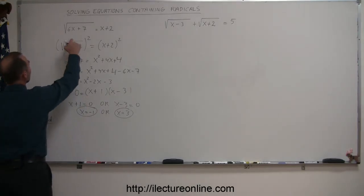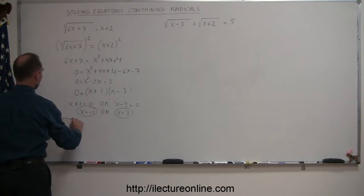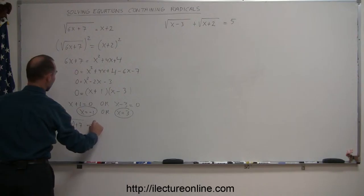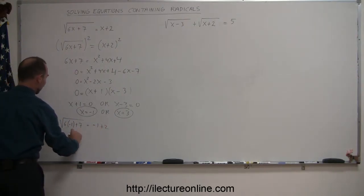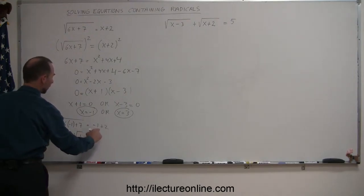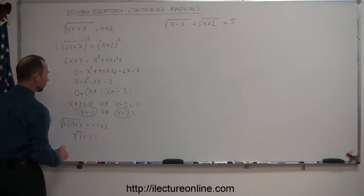So let's do a quick check. Plug in x equals negative 1, so we get the square root of 6 times negative 1 plus 7 equals negative 1 plus 2. That's negative 6 plus 7. That's the square root of 1 equals 1, and that is okay. That checks out.